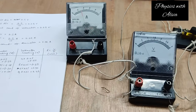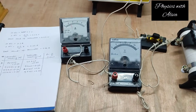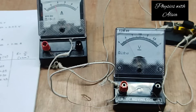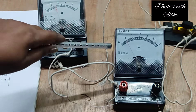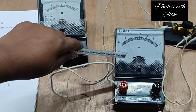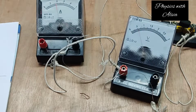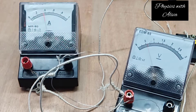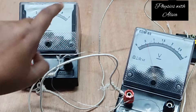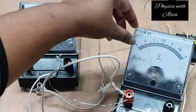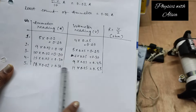Now we are taking another reading by changing the position of the rheostat. This is the ammeter reading and this is the voltmeter reading. Here we can see 15 small divisions are crossed by the pointer on the ammeter and nine small divisions are crossed by the pointer on the voltmeter. Now we have to take our last reading. Here the ammeter pointer has crossed 18 small divisions.